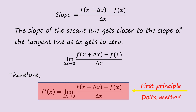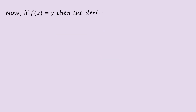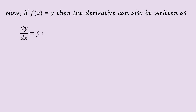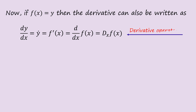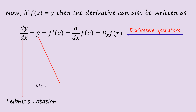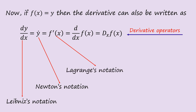This limit definition implies the first principle, also called the delta method. Now, if f(x) = y, then the derivative can also be written using the following derivative operators. The first is called Leibniz notation, the second is Newton's notation, the third is Lagrange's notation, and the last is Euler's notation.